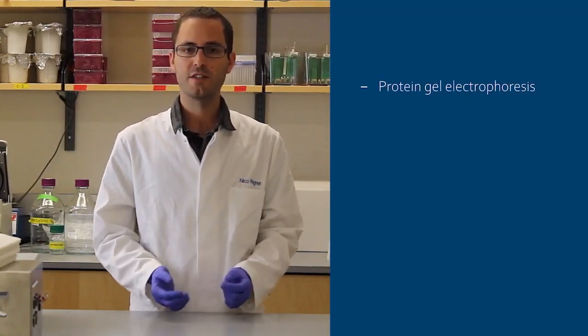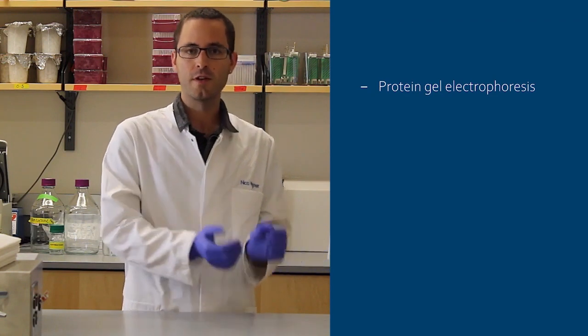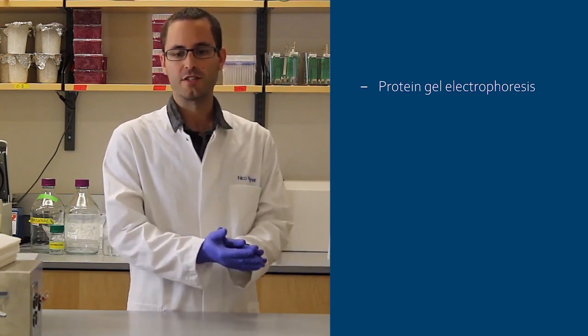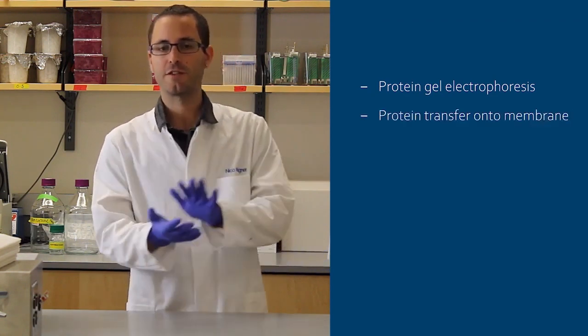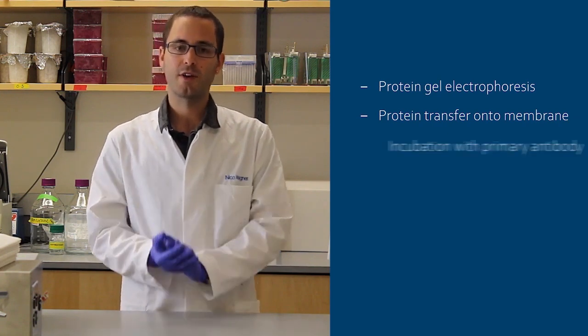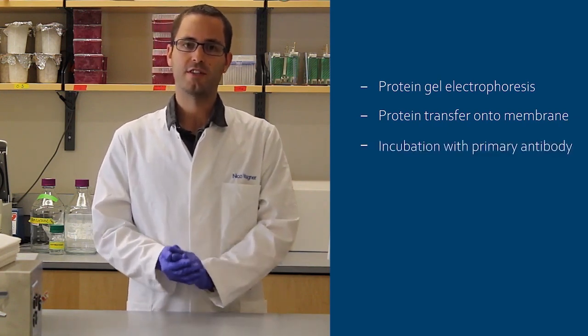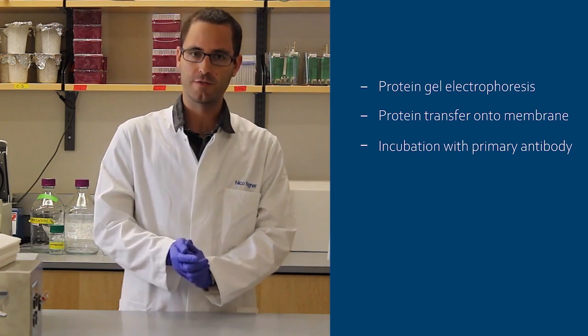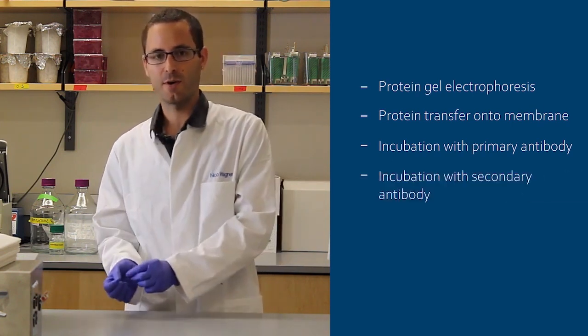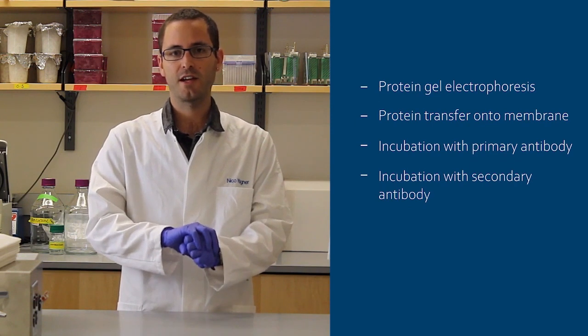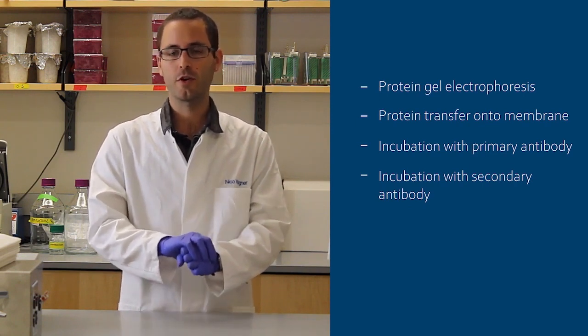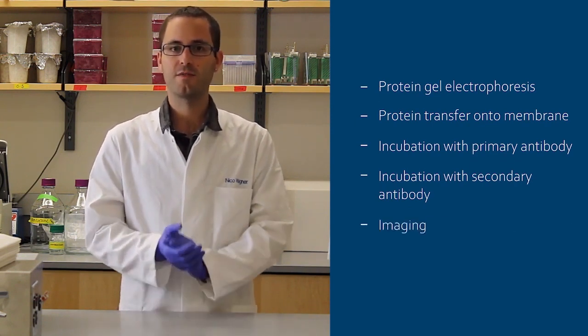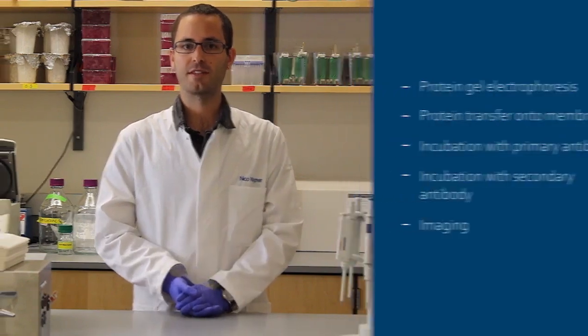The steps included in running a Western blot are a protein gel, which can be found in a different video, but using the product of this protein gel, the proteins themselves are transferred onto a membrane. A primary antibody is added to the membrane to specifically bind to your protein of interest. A secondary antibody binds the first antibody, and the secondary antibody usually contains some sort of fluorophore, which we are then able to see when placing everything into a camera system.